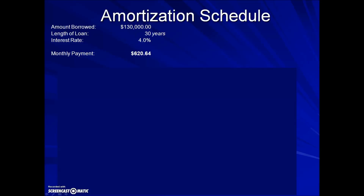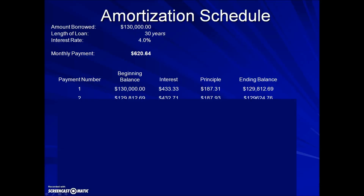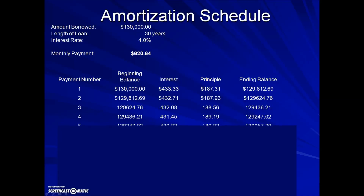Here's an example of an amortization schedule for someone who borrowed $130,000 for a term or length of a loan lasting 30 years, an interest rate of 4%, and throughout the course of this loan the monthly payment is $620.64.